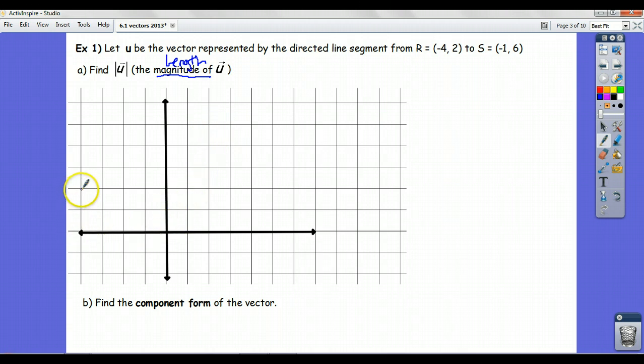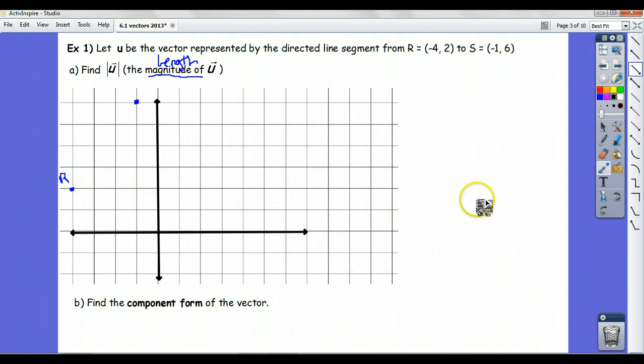And s is (-1, 6). So let me draw my vector here. There's vector u. It takes me from r to s.